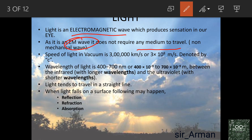Hence light is called a non-mechanical wave. The speed of light in vacuum is about 3 lakh kilometers per second — it travels 3 lakh kilometers in one second. In simple notation, we write it as 3 × 10⁸ meters per second.